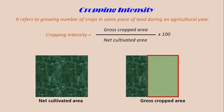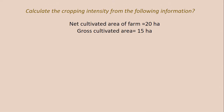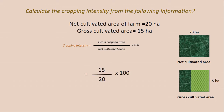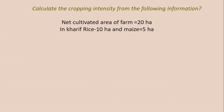Let's see by taking some examples. Problem 1: Calculate the cropping intensity from the following information where the net cultivated area of the farm is 20 hectares and gross cultivated area is 15 hectares. Using the formula: 15 ÷ 20 × 100 = 75%. Cropping intensity is usually represented in percentage form.